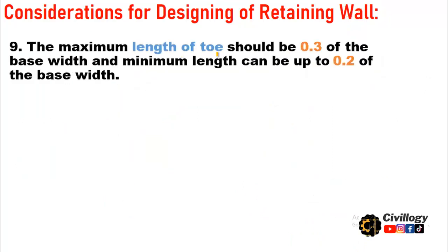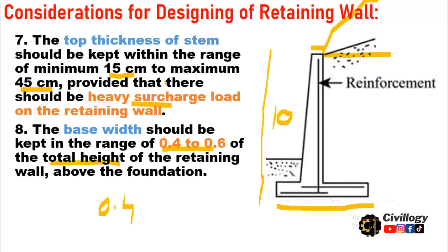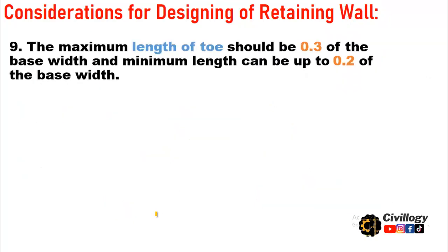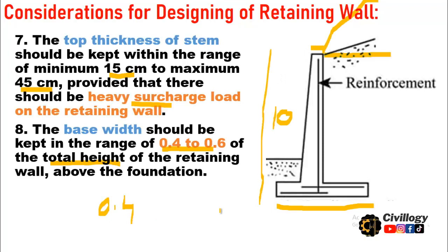Consideration nine: The maximum length of the toe should be 0.3 of the base width, and the minimum length should be 0.2 of the base width. For example, if the height of the stem is 10 meters and the base width is at the minimum value, then the toe length should be approximately 0.2 to 0.3 of that base width. I hope you are getting my point.